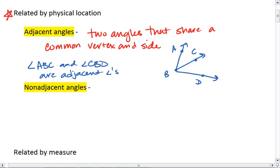Non-adjacent angles are angles that are not adjacent. Honestly, that's the easiest way to remember it.